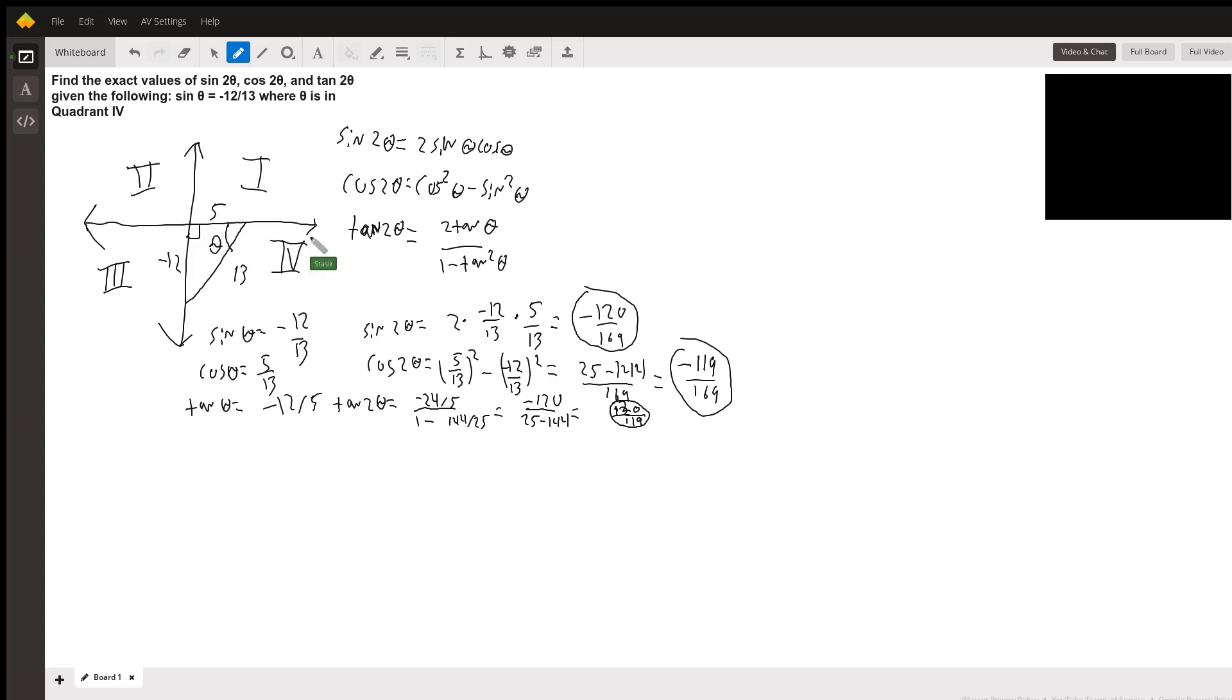In the context of the four quadrants, in the fourth quadrant sine is negative, cosine is positive, and tangent is negative. If we draw this triangle with θ, we can see that sine θ is -12/13.